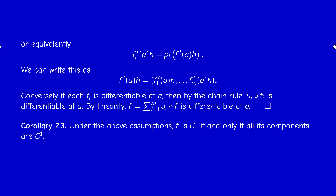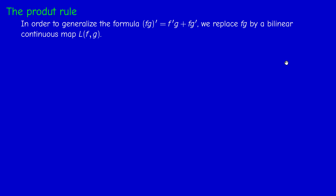As a corollary, under the same assumptions, F is C¹ if and only if all its components are C¹, because continuity is preserved: a function is continuous if and only if all its components are continuous, as known from topology.